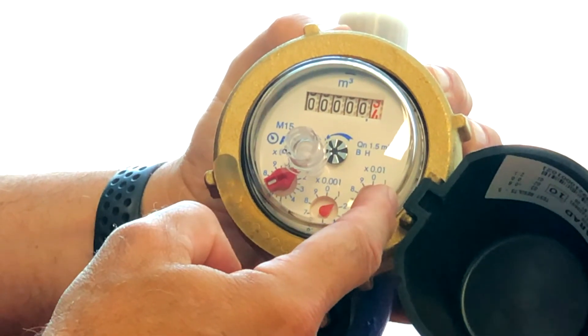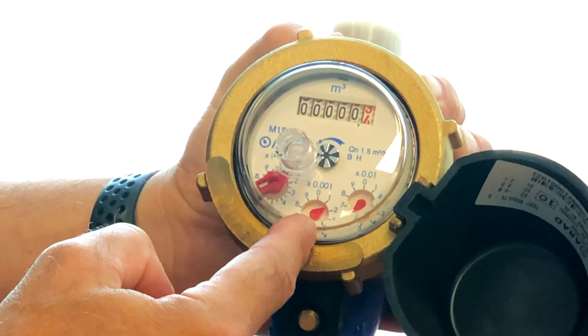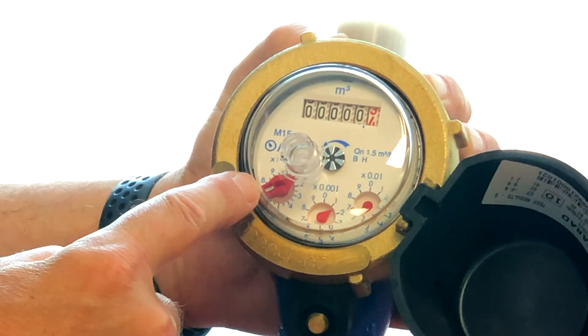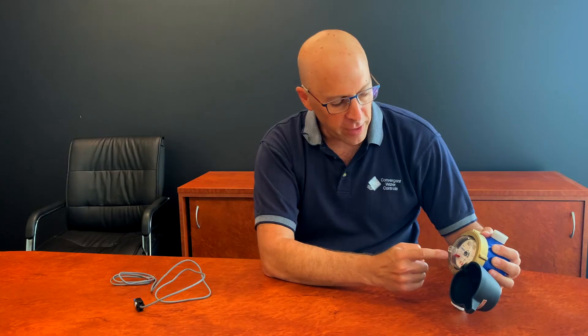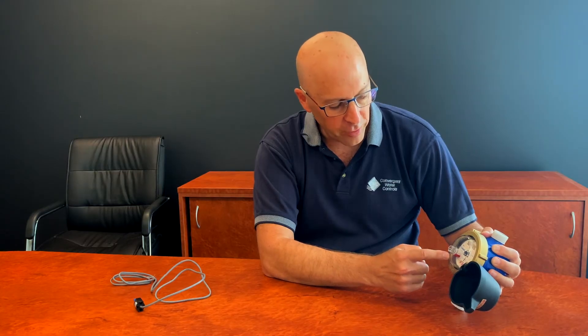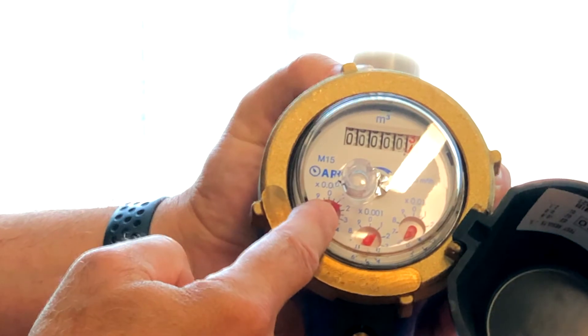So on the right-hand side is 0.01, center is 0.001, and left-hand side is 0.0001, which means that every gradient on that dial is 100 mils. So it's 1, 2, 3, which translates to 100, 200,